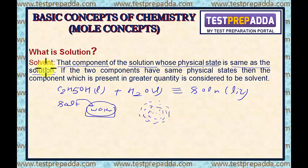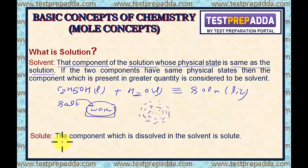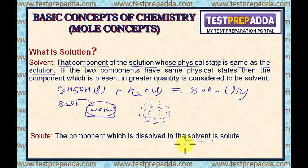Now we have defined solvent, so easily we can say solute is that component which is dissolved in the solvent, because now solvent is defined. Dear students, components of a solution can be in solid state, liquid state, and gaseous state. Depending upon the physical states of solvent and solute, nine types of solutions are possible.